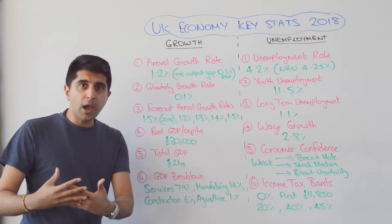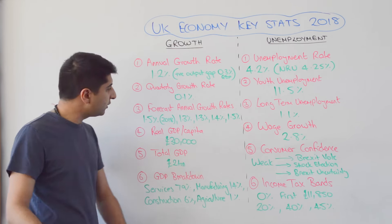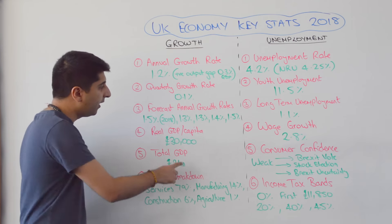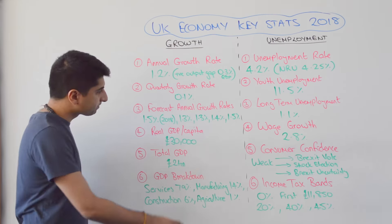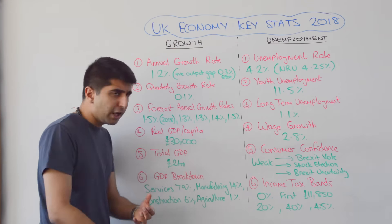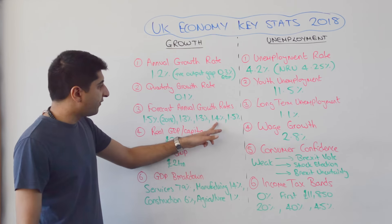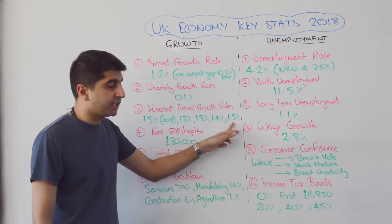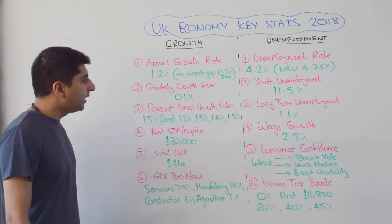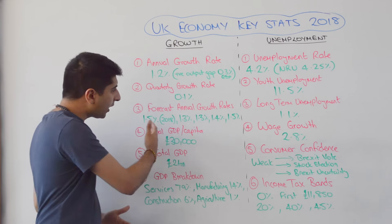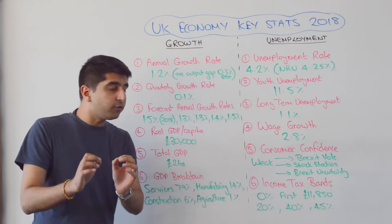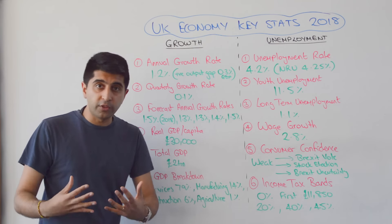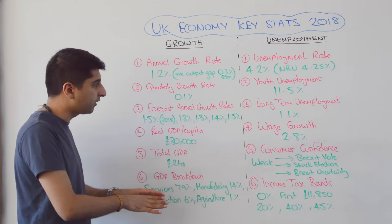Forecast annual growth rates by the OBR are still quite bullish, though. Looking at forecast growth: 1.5% for this year, 1.3% for next year, 1.3% for the year after, 1.4% for 2021, and 1.5% for 2022. Forecast growth rates are still bullish, but bear in mind these were made before we saw this shock growth figure of Q1 this year, so these could be revised downwards.